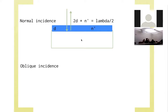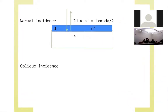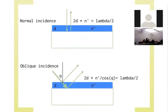For oblique incidence, the problem is similar but light comes in at an angle. There is a reflection from the top interface and another from the bottom interface. Let θ be the angle. You compute the path length going down and back up: d/cosθ + d/cosθ. So the condition becomes 2d/cosθ · n' = λ/2, and you can solve for d. At θ = 45°, plug in the numbers and get the answer. Note: I made a mistake here — when going to oblique incidence, you should account for Snell's law of refraction, so the angle inside the layer should be θ′, not θ.